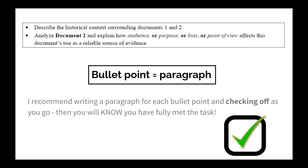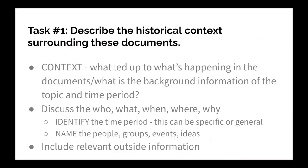You will know that you have fully met the task, which is one of the biggest parts of scoring. Task number one tells you to describe the historical context surrounding these documents. The word context means what's led up to what is happening in these documents — the background information of the topic and time period. So you're thinking about everything that's led up to this moment where you see these two documents in front of you. In that paragraph you'll want to discuss the who, what, when, where, and why.